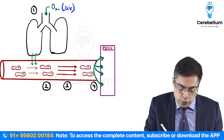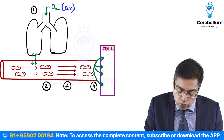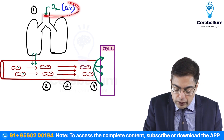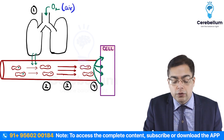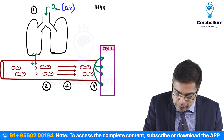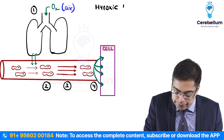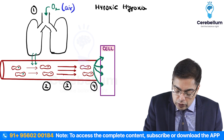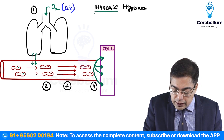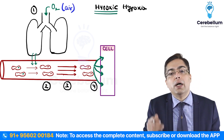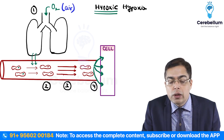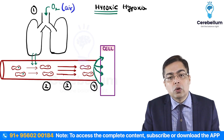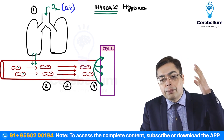Any interference at any of these four steps can cause trouble at the cellular level. If a person breathes in a low concentration of oxygen — a problem at step one — this is called hypoxic hypoxia. This is typically seen in individuals going to high altitudes, such as mountaineers. In clinical vignette questions, look for a person going to high altitude who then suffers a hypoxic injury.